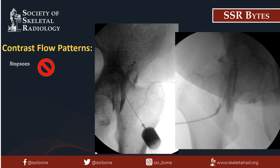This is an example of a contrast flow pattern along the iliopsoas myotendinous junction. Notice how the contrast courses in a linear craniocaudal orientation following the course of the iliopsoas muscle and tendon. If this is encountered, repositioning of the needle is required for intra-articular placement. Iliopsoas injections can be performed as therapeutic interventions when indicated under fluoroscopic or ultrasound guidance, and the trend is for these to be performed under ultrasound, which can also provide direct visualization of the close-by femoral vasculature.